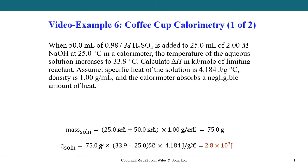So in this instance, if you look at the question, you have an acid-base reaction taking place between sulfuric acid and sodium hydroxide. The two solutions are mixed in a calorimeter and the temperature of the solution increases to 33.9 degrees from 25 degrees C. We have two components: 50 mL of the sulfuric acid and 25 mL of the sodium hydroxide.